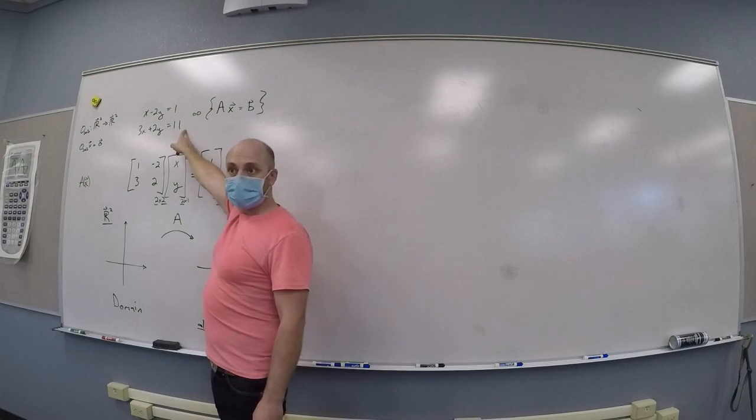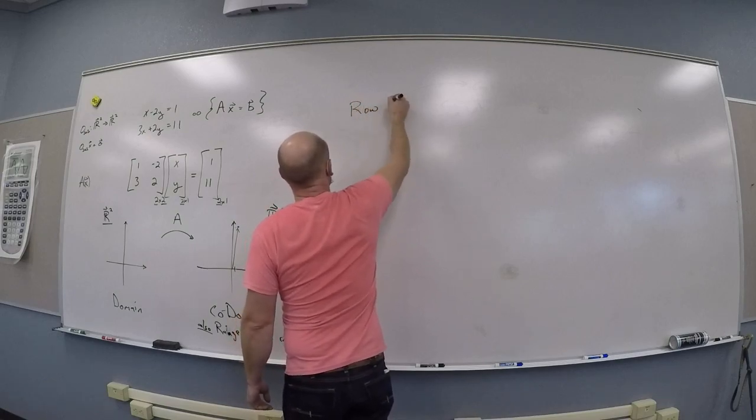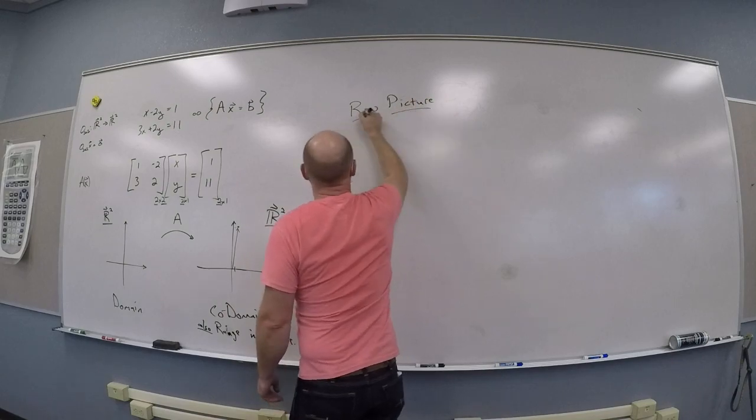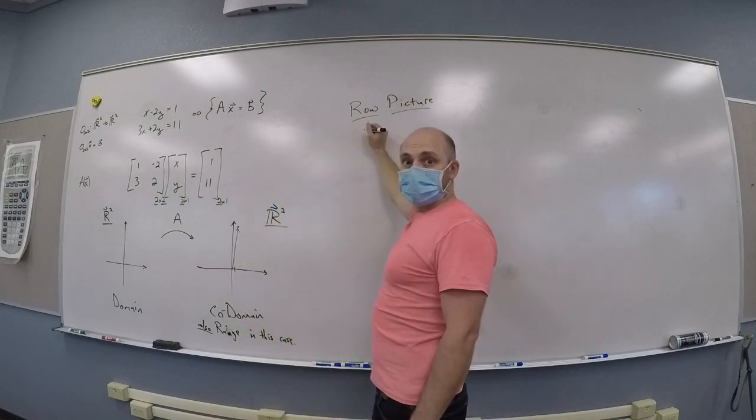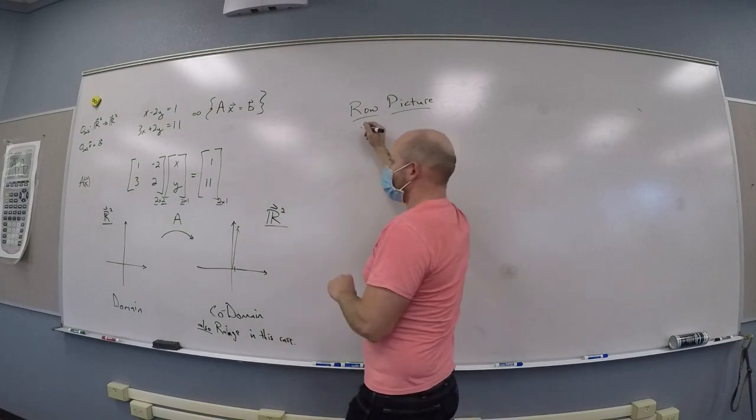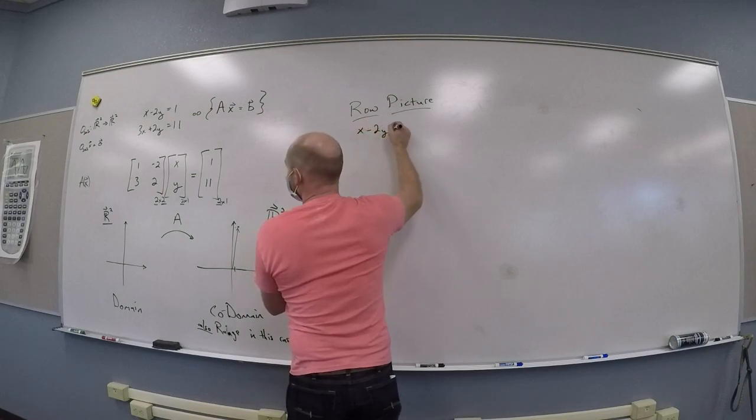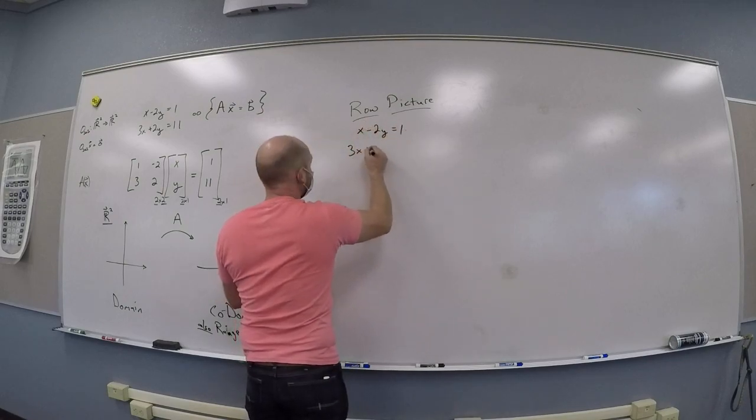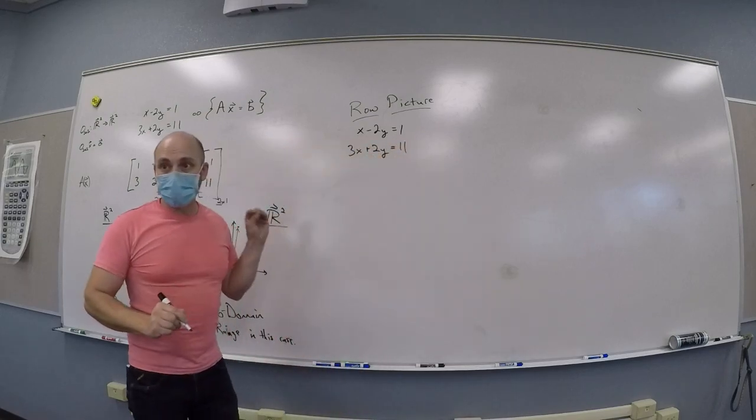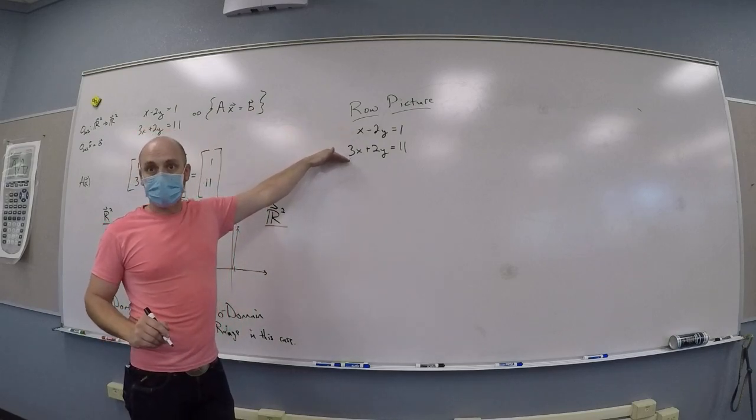Okay, so if I consider that system of equations, now I'm using the kind of row multiplication picture. The row multiplication picture gives me exactly the same set of equations that I had before. I'm going to rearrange them a little bit, so x minus 2y is 1 and 3x plus 2y is 11.